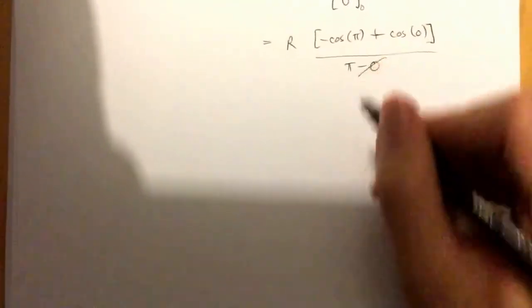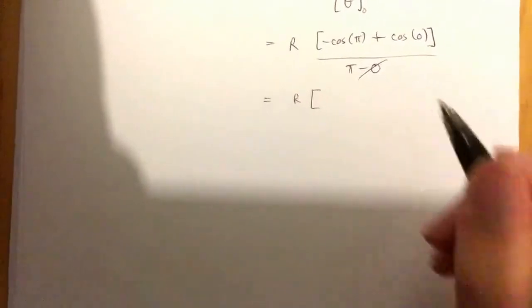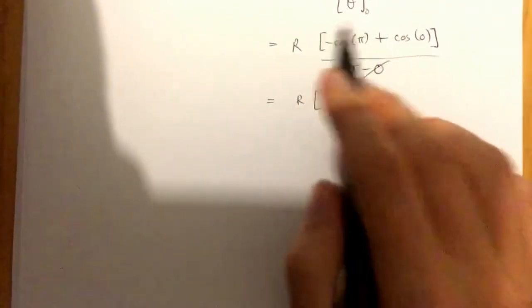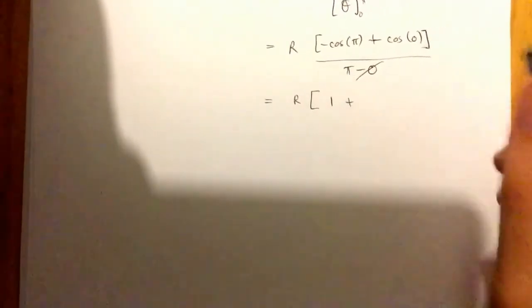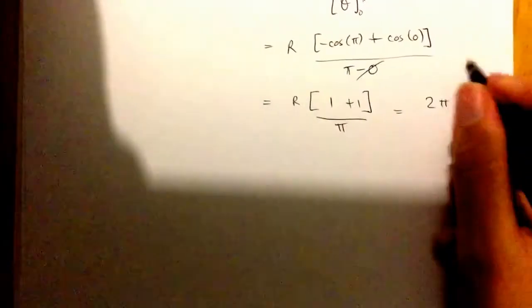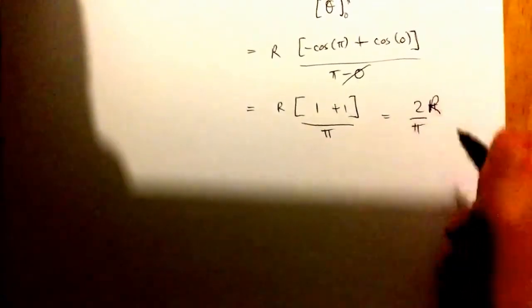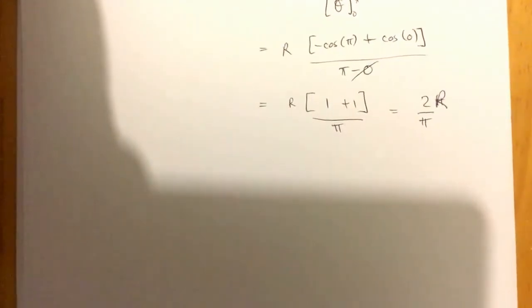So clearly that's just pi in the denominator there. So what we're going to end up with is r. Cosine of pi is negative 1, so we've got negative negative 1, so that's positive 1, plus cosine of 0, which is just 1, over pi. So we end up with 2 over pi, 2 over pi times the radius, as being the y position of the centre of mass.